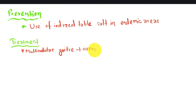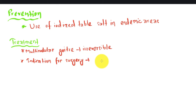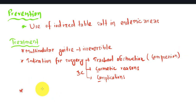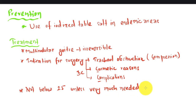Talking about treatment: multiple nodular goiter is an irreversible pathology. The indications for surgery are: number one, tracheal obstruction; number two, cosmetic reasons; and number three, complications. So we have three Cs — compression, cosmetic reasons, and complications. Surgery is not performed below age 25 unless very much needed, as there is a high chance of recurrence.